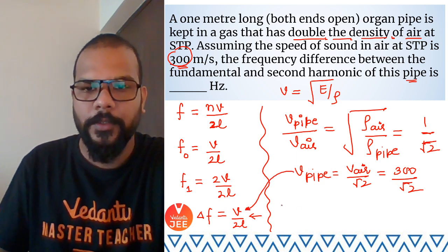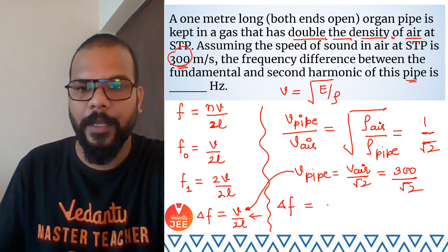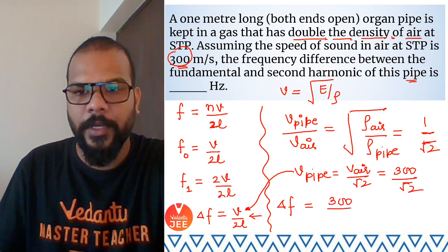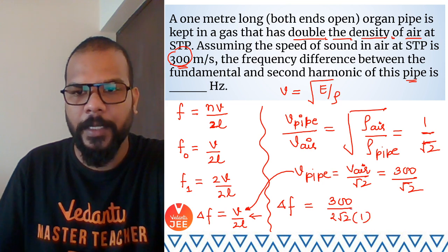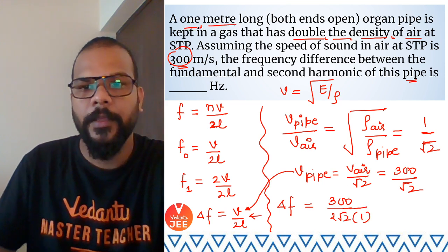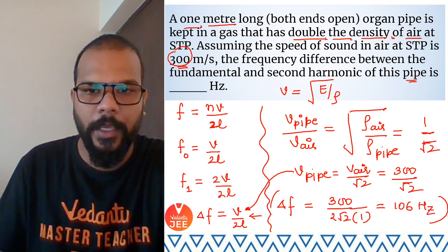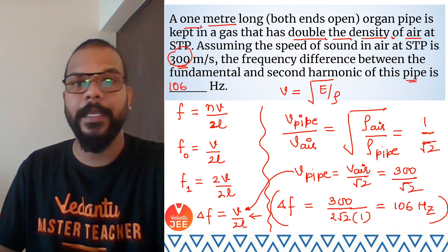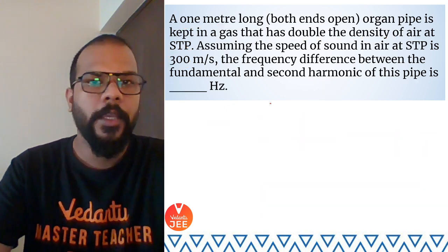Now we substitute this into our frequency difference formula: the difference between the second harmonic and fundamental frequency is v/2L = (300/√2) / (2×√2×1) = 300/(2×2) = 300/4, which comes out to approximately 106 Hz. So the answer to this question is 106 Hz.